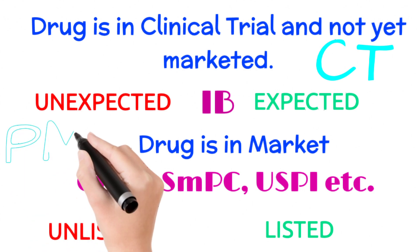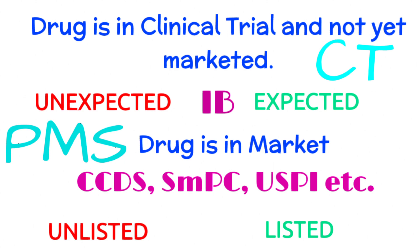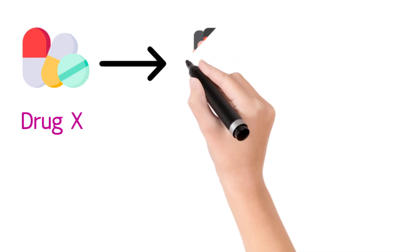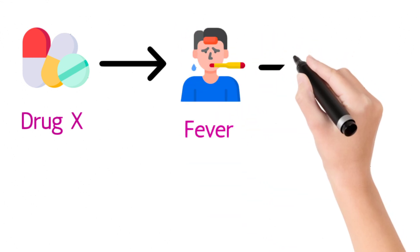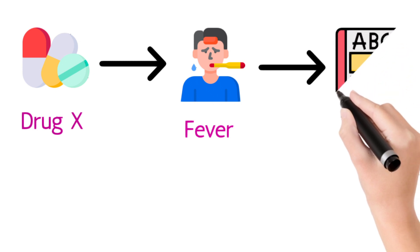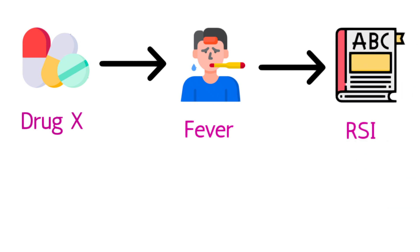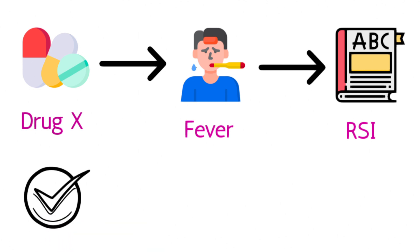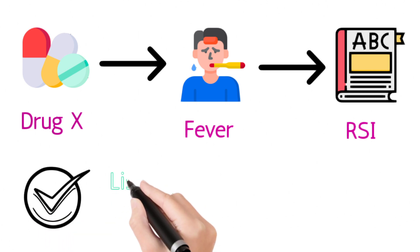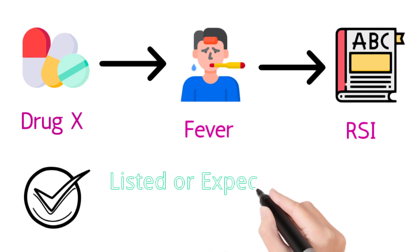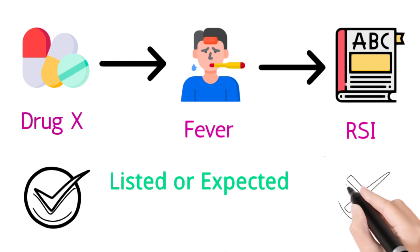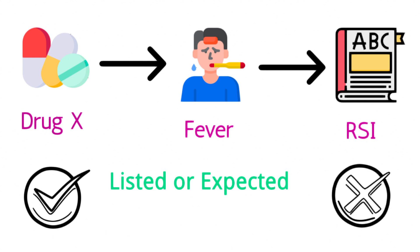Such reports are also called post-marketing surveillance reports. Let's take one example to understand listed or expected and unlisted or unexpected events in detail. If we receive a report of drug X causing fever in a patient, we will check for the event fever in the reference safety information document of drug X. If the reported event fever is present in the reference safety information document, then the event fever is considered as listed or expected. If not present, then the event fever is considered as unlisted or unexpected.